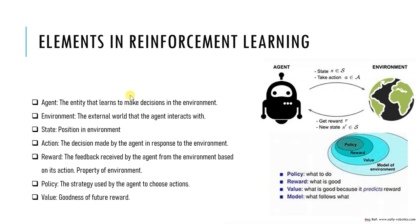First, let's understand environment. The environment is like a physical world in which the agent operates. It is like a source of sensory input for the agent and determines the consequence of agent actions. The environment can be simulated, such as in a video game, or it can be real world, such as a robot operating in a factory.